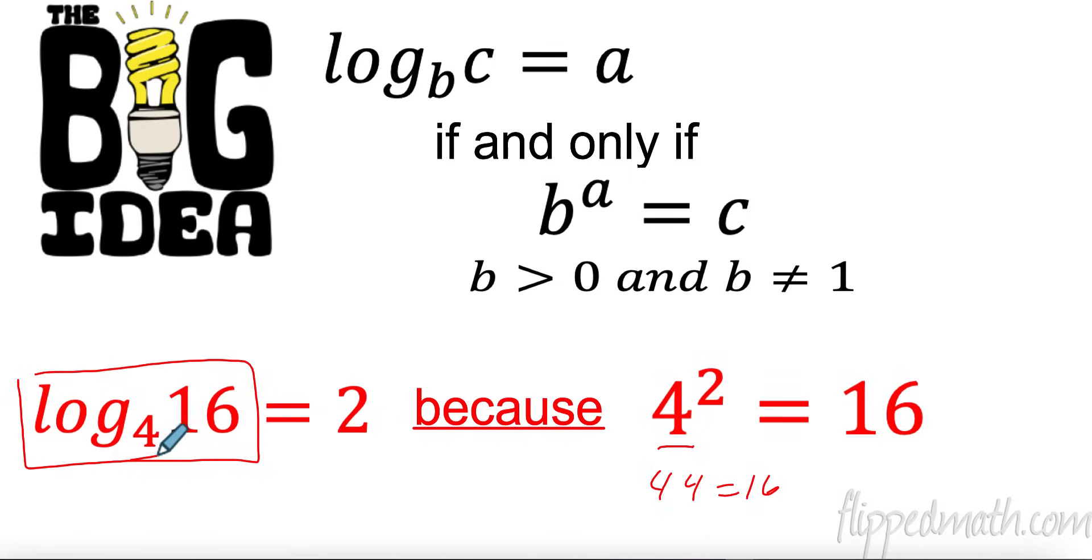Now we have a couple constraints. We cannot have a negative log. We're not doing those. Can't have negative bases, and b can also not equal 1. That's our big constraints right there. So when you run into this, if b is less than or equal to 0, can't have that, and it cannot equal 1.